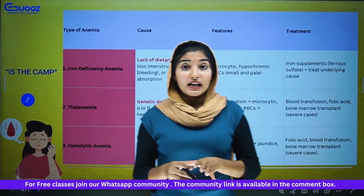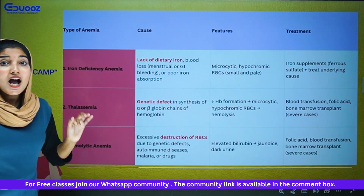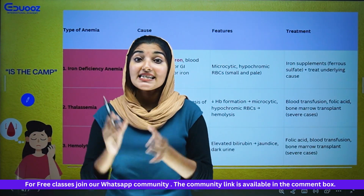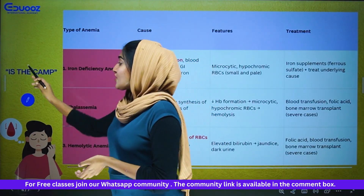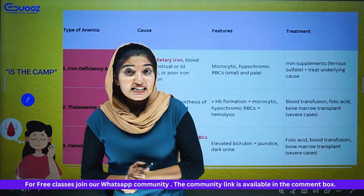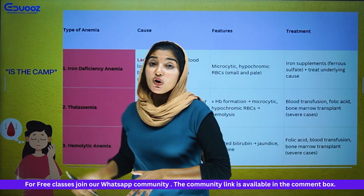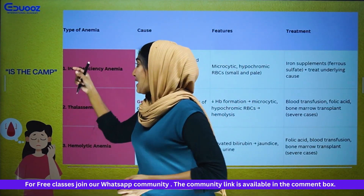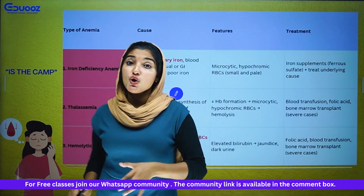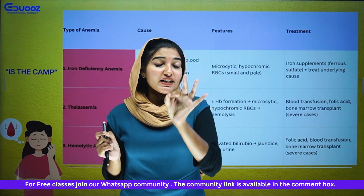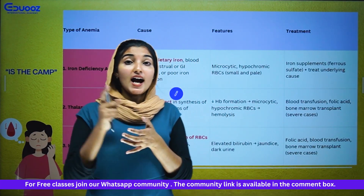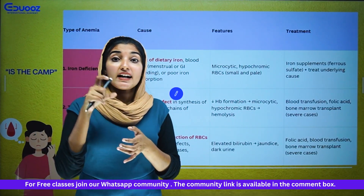Here is a mnemonic to remember the anemia types: E-ISTAMP. I belongs to iron deficiency anemia, S belongs to sickle cell anemia, T belongs to thalassemia, H is hemolytic anemia, A belongs to aplastic anemia, M belongs to megaloblastic anemia, and P belongs to pernicious anemia. Pernicious anemia is vitamin B12 deficiency anemia, which is a megaloblastic anemia classification.